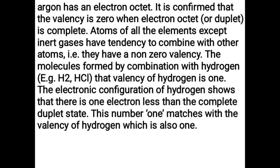Atoms of all elements except inert gases have a tendency to combine with other atoms — that is, they have a non-zero valence. The molecules formed by combination with hydrogen, e.g. H₂, HCl, show that the valence of hydrogen is 1. The electronic configuration of hydrogen shows there is one electron less than the complete duplet state. This number 1 matches with the valence of hydrogen, which is also 1.